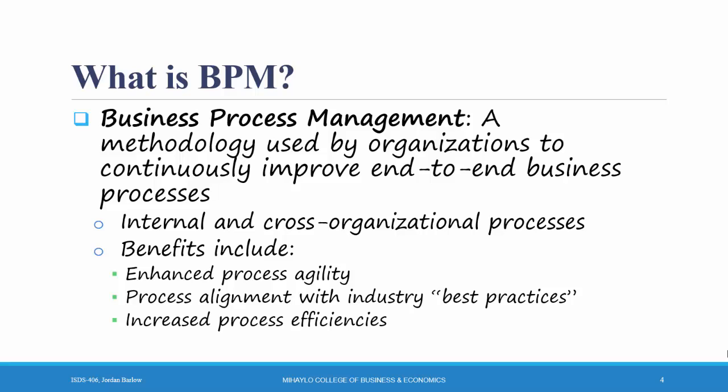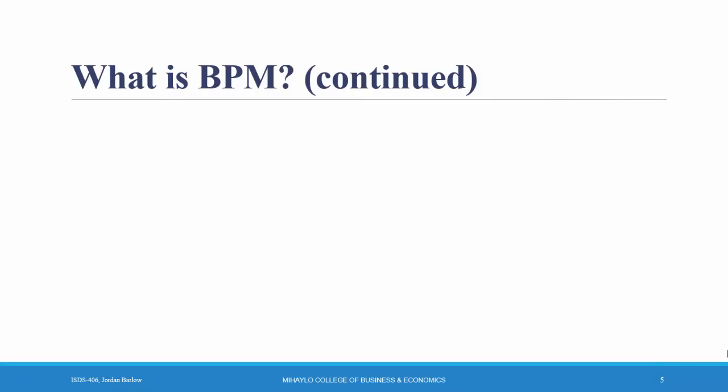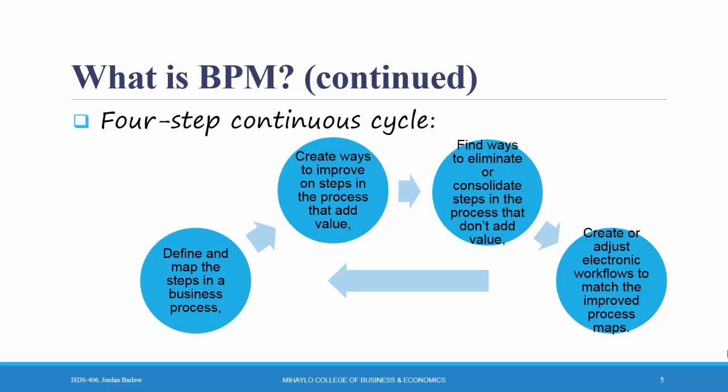In other words, the point of business process management is to look at a process and the way your organization is carrying it out, and see if there are ways it can be improved. Business process management includes a four-step cycle: first, you define and map out or diagram the steps in your business process. Then you think about ways to improve those steps. You can also eliminate or consolidate steps that don't add value. Finally, you create or adjust electronic workflows to match the improved process maps.